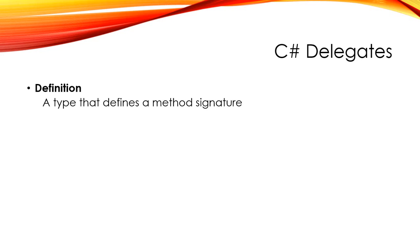With the types we normally deal with, they have some kind of data and some methods to interact with them. For example, we have the integer type, which contains a value and also has some methods like Parse and ToString. Delegates are a little bit different — instead of containing data and methods, a delegate just contains a method's signature.